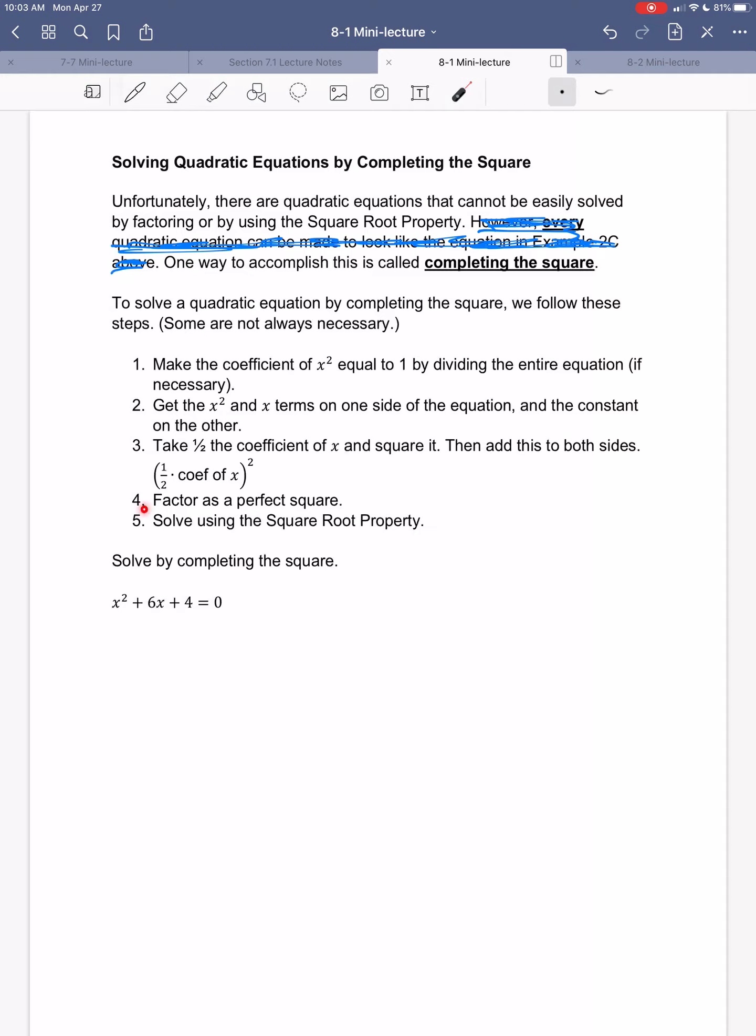So, these are steps that we would follow to complete the square. Some are not always necessary. So, the most complicated problem, we would have to go through all five of these steps. Most of them, we don't have to quite do all of them. In fact, in this one right down here, I don't have to worry about step one at all. It says, make the coefficient of x squared equal to one. Well, there already is a one here in front of x squared. So, I don't have to worry about that.